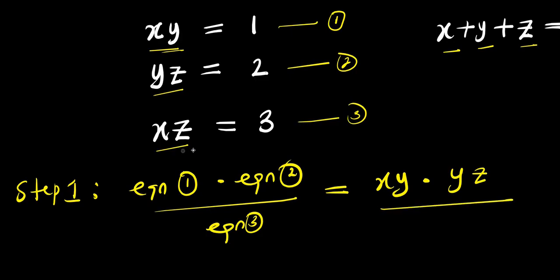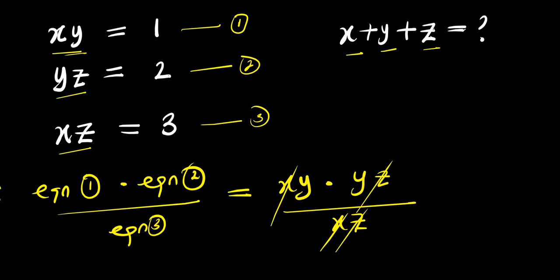Equation 3 is x times z. So what happens? x cancels x, z cancels z. So what do I have left? I simply have y times y, which is y squared.